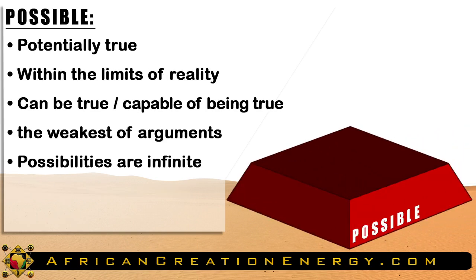The first layer of the pyramid, colored in red, represents information, premises, ideas, or concepts that are possible — that is, information that has the potential to be true. It may or may not be true with various degrees of certainty. Possible information is information that obeys the laws of physics; it exists in the realm of possibility within the limits of ability or reality. There are no contradictory proven facts, but there is also no guarantee that it is true. Possible information has the capability of being true, but just because something can happen doesn't mean that it will happen.